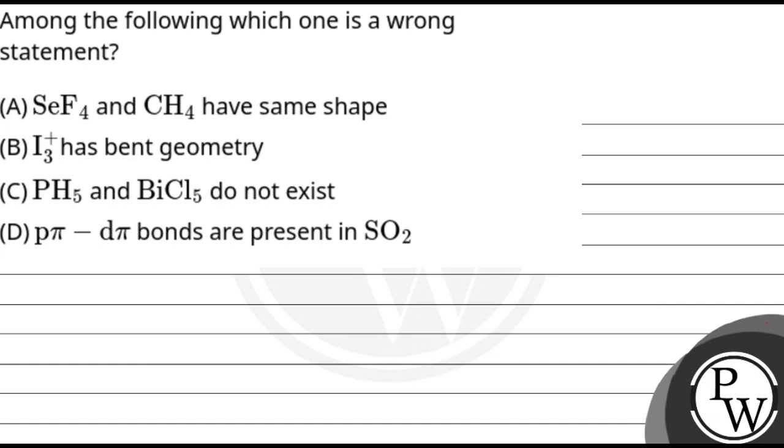Let's see the question. The question says among the following, which one is a wrong statement? Option A: SeF4 and CH4 have same shape. Option B: I3+ has bent geometry. Option C: PH5 and BiCl5 do not exist. And option D: p-pi d-pi bonds are present in SO2.